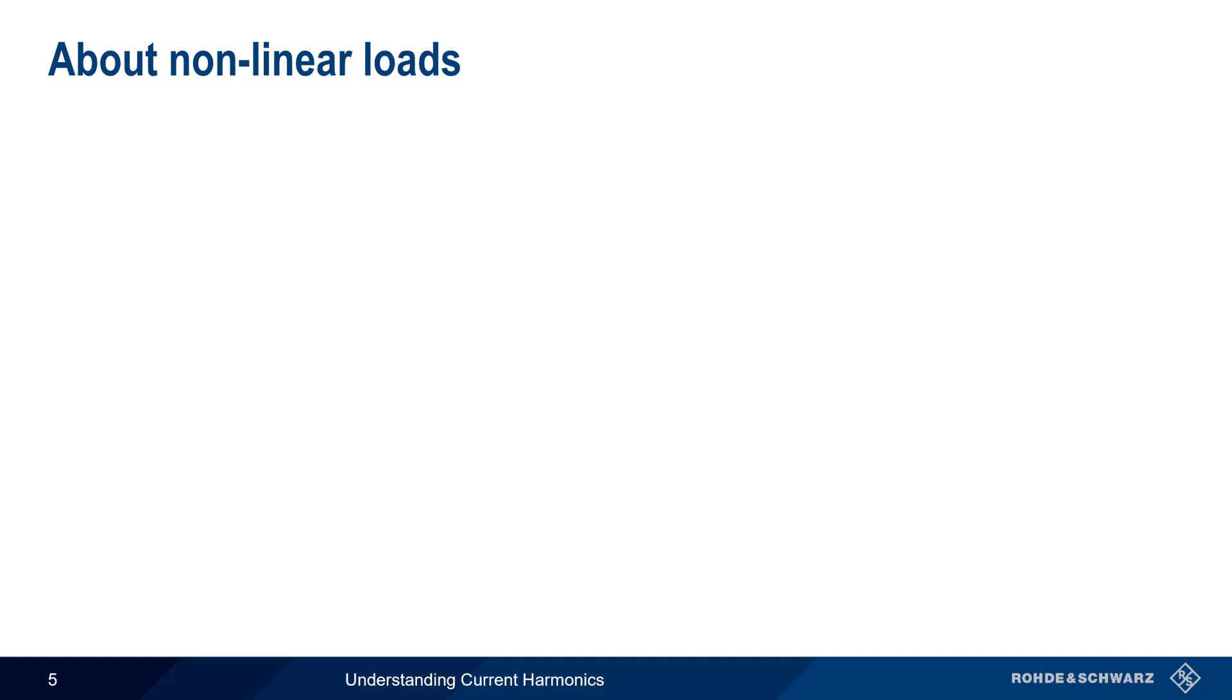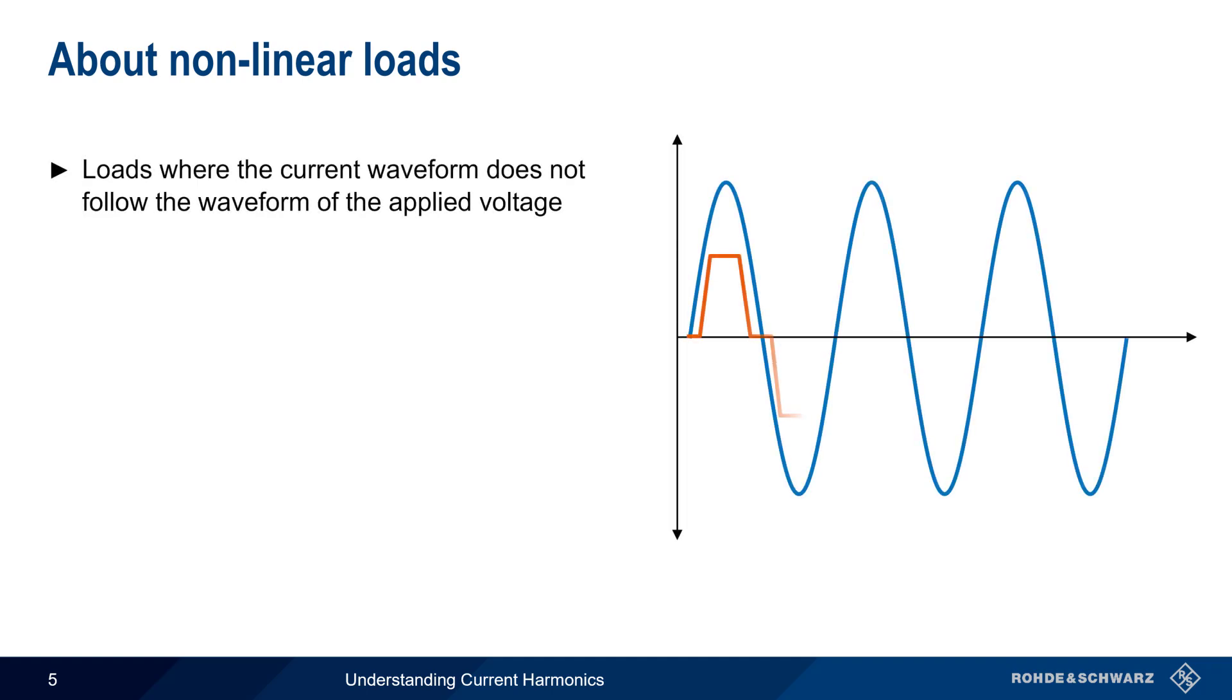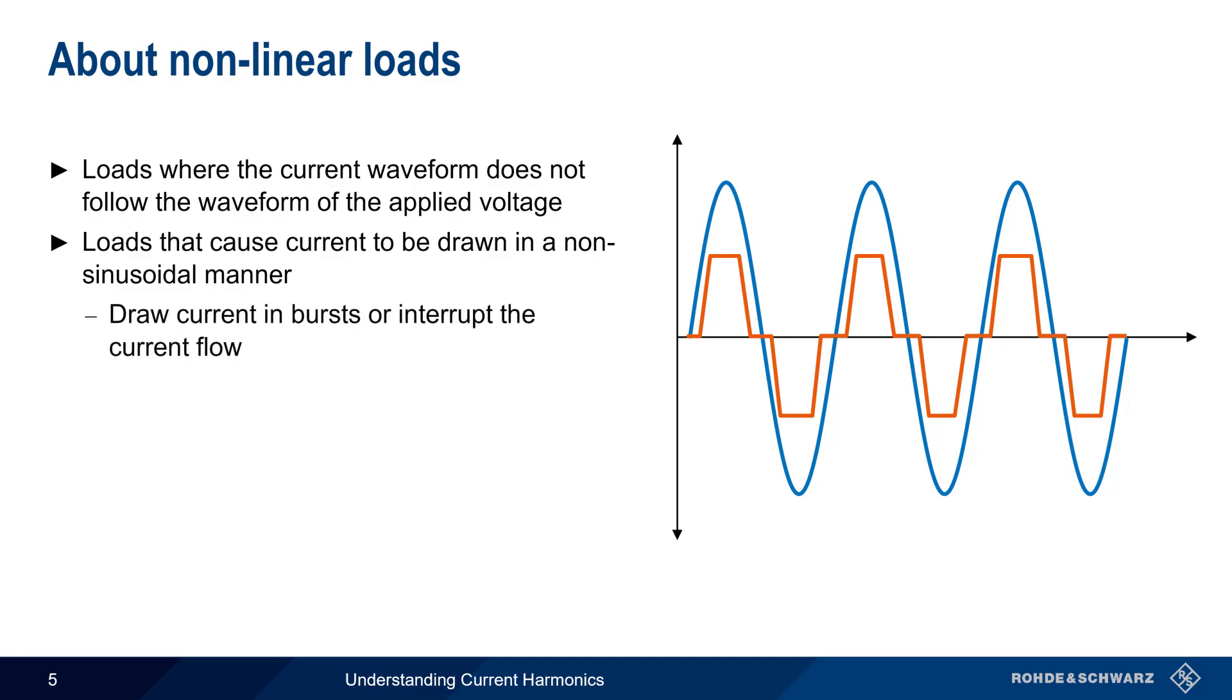A nonlinear load, therefore, is one where the current waveform does not follow the applied voltage waveform. Since the AC mains voltage is usually very sinusoidal, this means that nonlinear loads are loads that draw current in a non-sinusoidal manner. This most often occurs when devices or loads draw current in bursts or pulses, or otherwise interrupt the current flow.